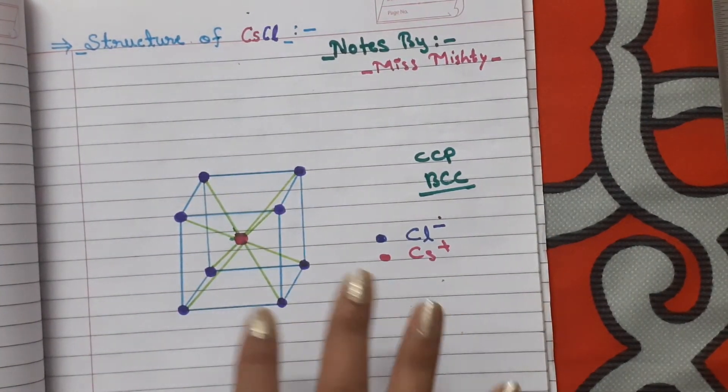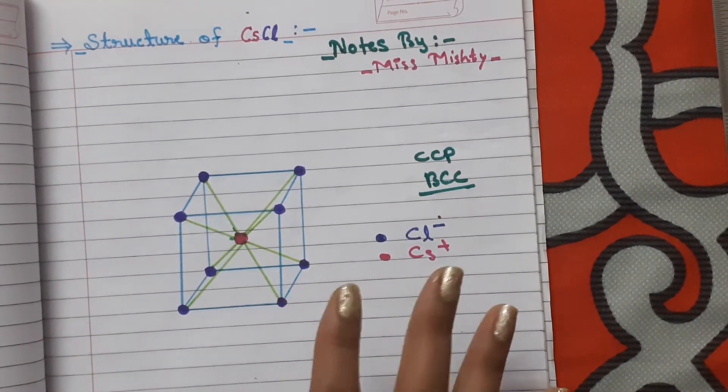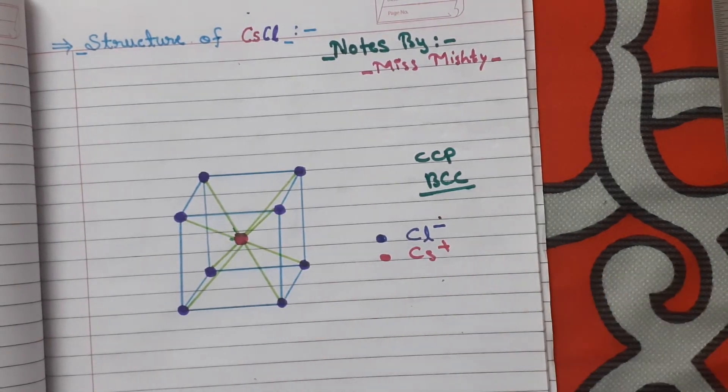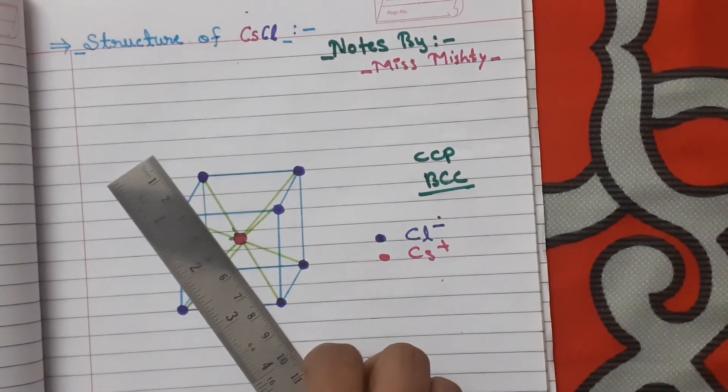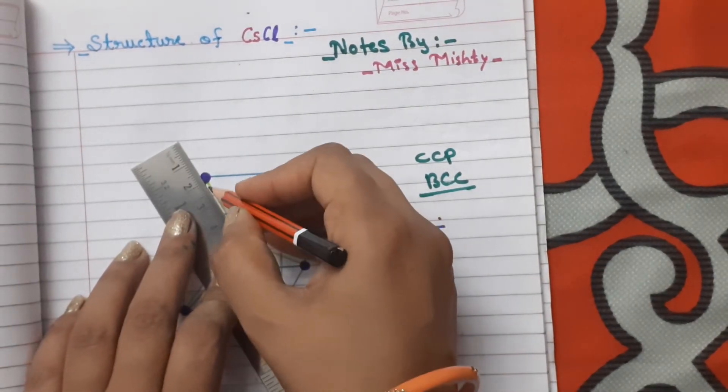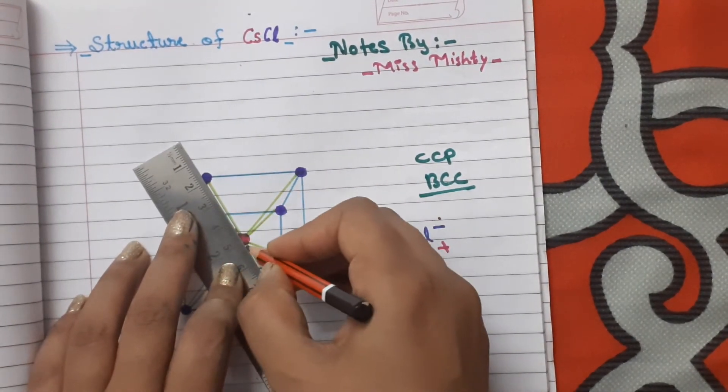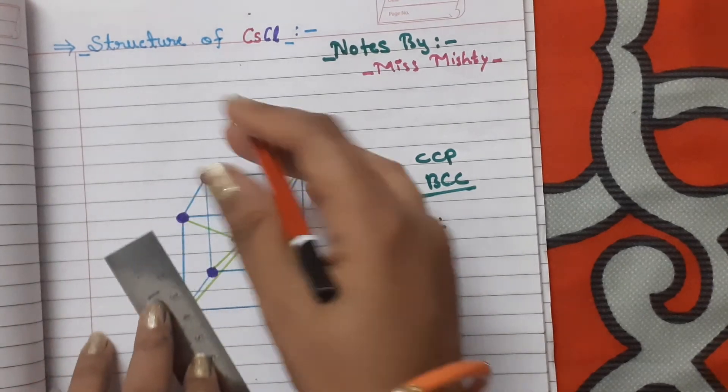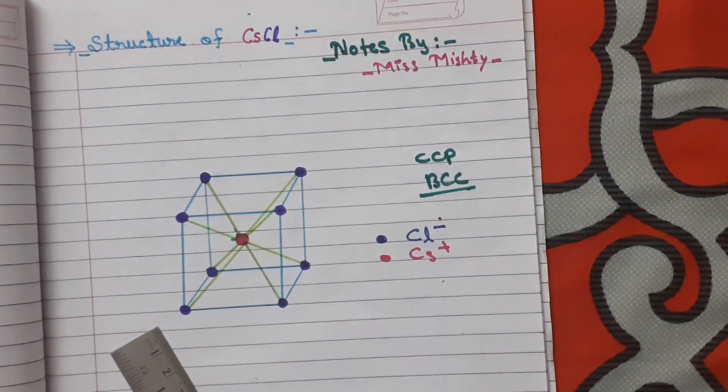Now talking about the structure, it is a really simple structure. You only need to join the balls with cesium ion.